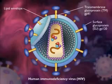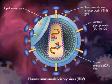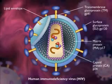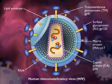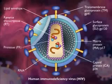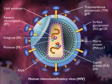The core is composed of P24 capsid protein and the P17 matrix protein helps maintain viral structure. Inside the core are two identical copies of single-stranded RNA viral genome and three enzymes: reverse transcriptase (RT), protease (PR), and integrase (IN).